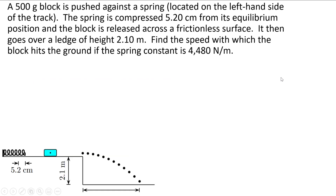So let's do a practice problem. A 500-gram block is pushed against a spring located on the left-hand side of the track. The spring is compressed 5.20 centimeters from its equilibrium position, and the block is released across a frictionless surface. It then goes over a ledge of height 2.10 meters. Find the speed with which the block hits the ground if the spring constant is 4,480 newtons per meter. We want to find the speed at the point it hits the ground, given information about the compression of the spring.